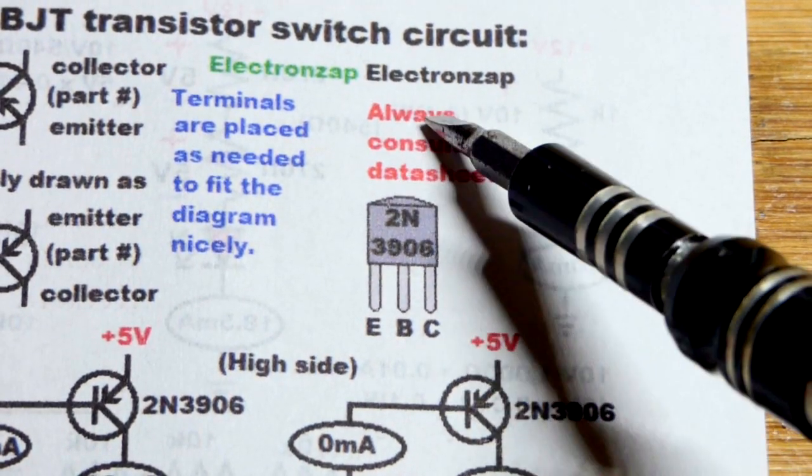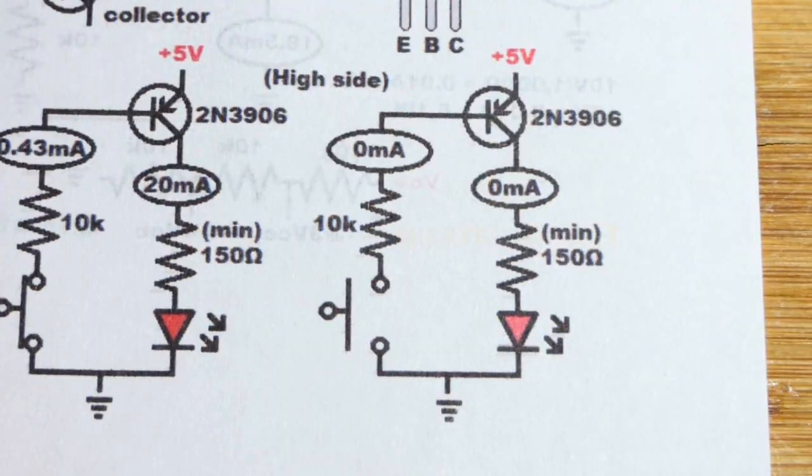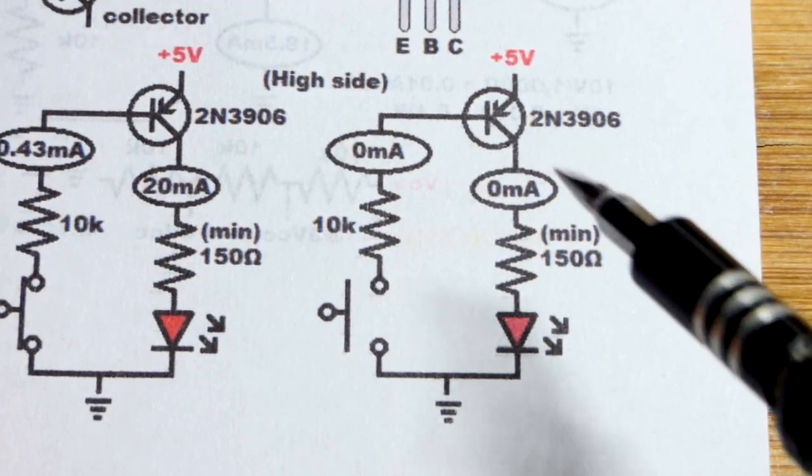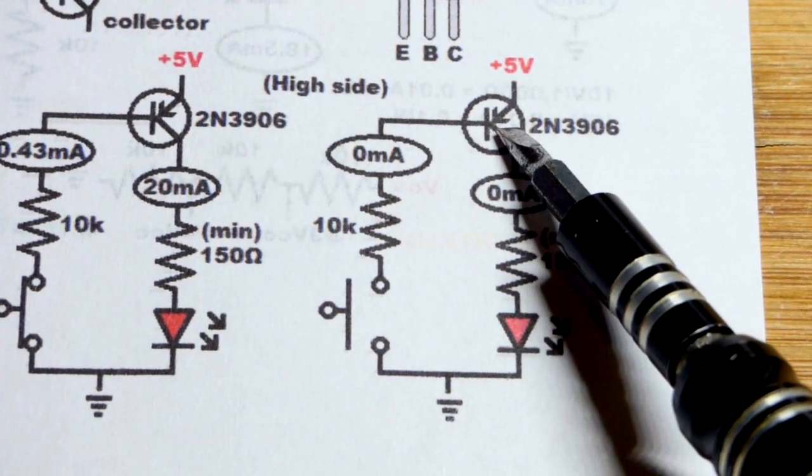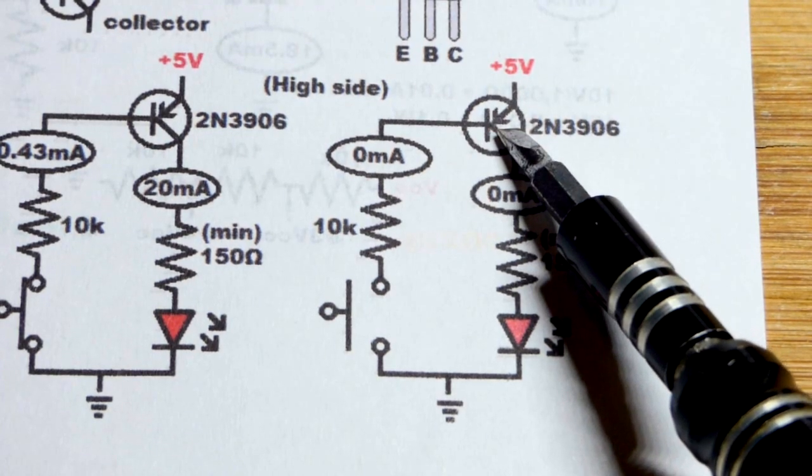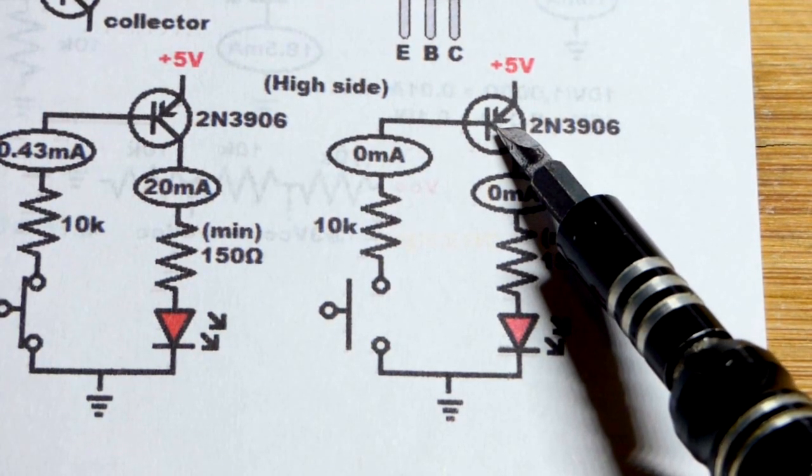To get all the specific values, consult a data sheet. So now, when it comes to the switch circuit with the PNP bipolar junction transistor, it's pretty much the same as the NPN, but the polarities and voltages are opposite.